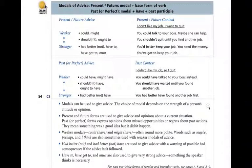Now let's look at past context. For example: 'I didn't like my job, so I quit.' Using past modals with could have, might have, should have, ought to have, had better have, and negatives: 'You could have talked to your boss instead of quitting, but you didn't.' Stronger: 'You should have waited until you found another job, but you didn't — you quit without finding another job.' 'You had better have found another job first.' That's too bad. You probably have some regrets now that you have no job at all.